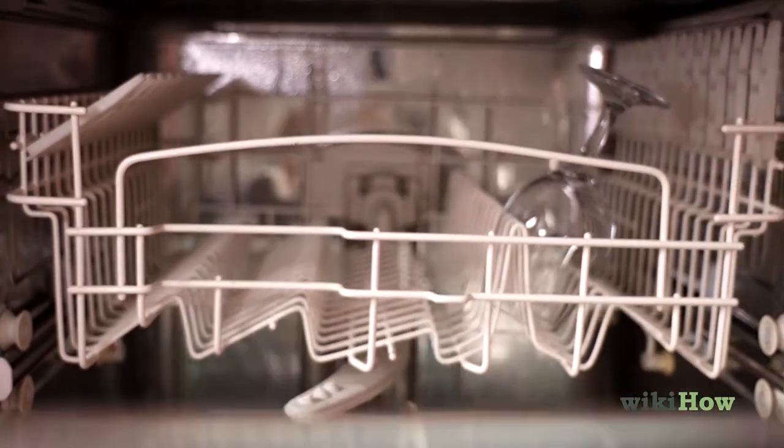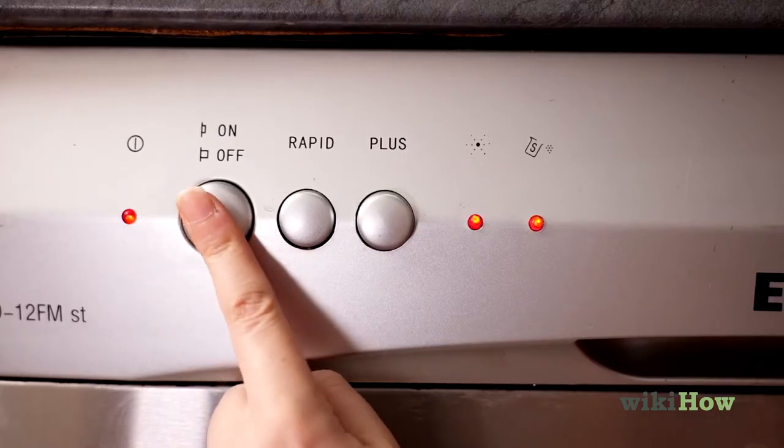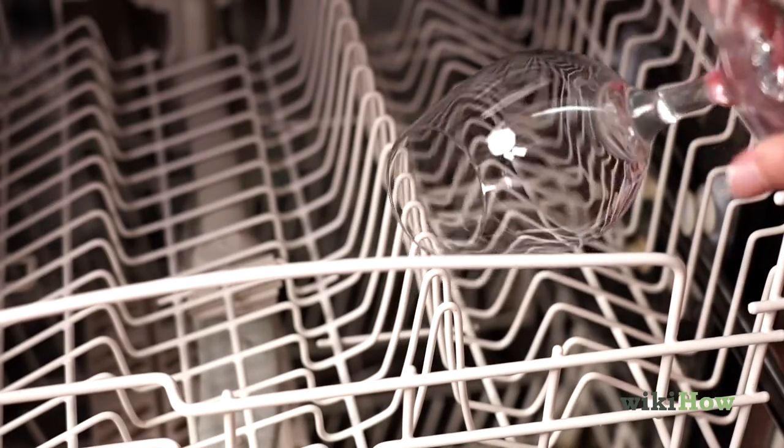Then, run a standard wash cycle with the machine set to the air dry setting. This will keep your wine glass from weakening over time.